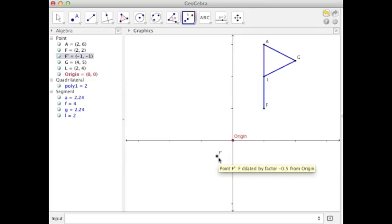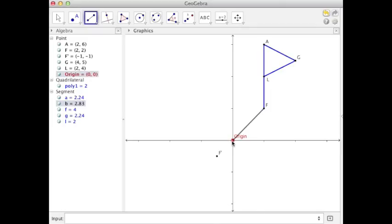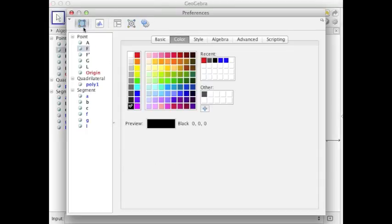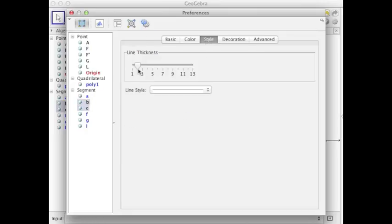dilate F through the origin with a scale factor of negative 1 half. And so we see there is F prime down there. Kind of interesting is the segment length from F to the origin is twice as long as F prime to the origin. Also, since this is in the first quadrant, it's in the positive direction, this is in the negative direction.